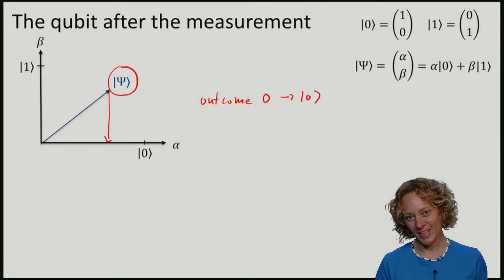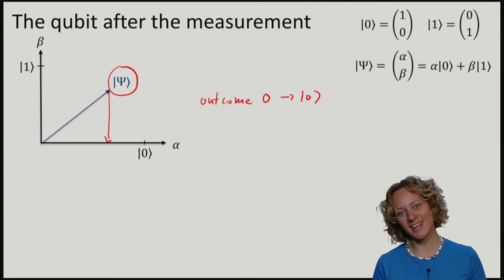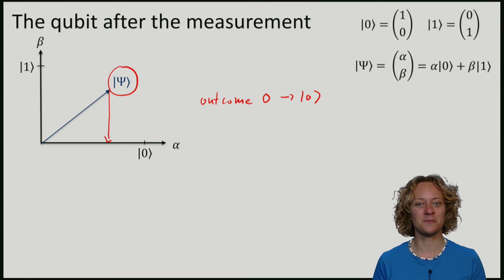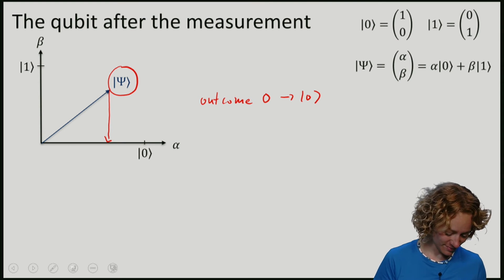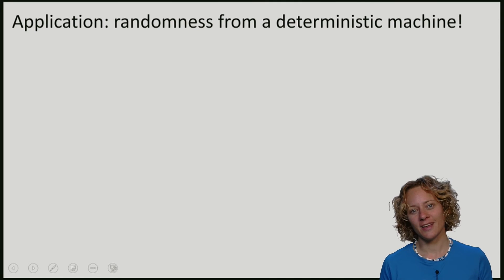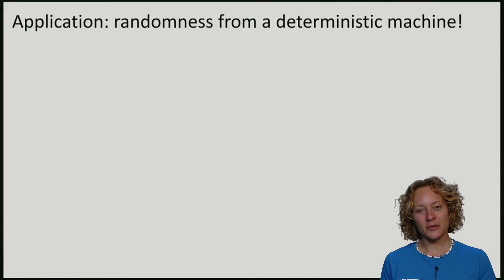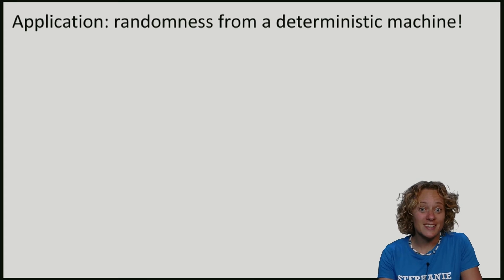It turns out that we can already find a cool application of what we have just learned. We can see that we can generate genuine randomness from a deterministic process.